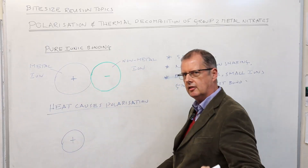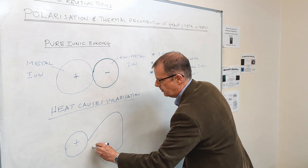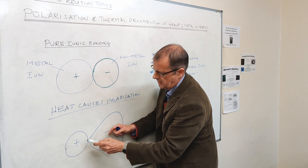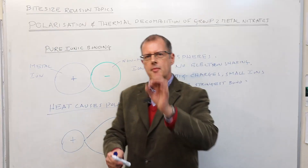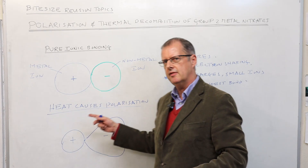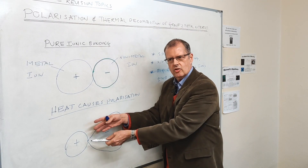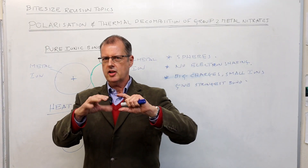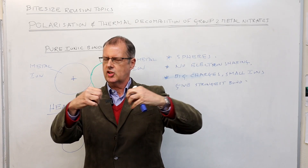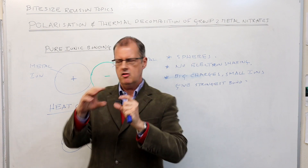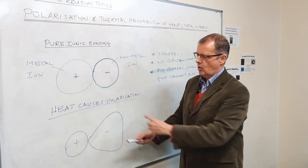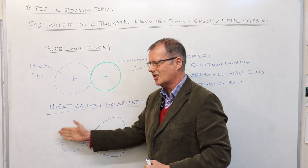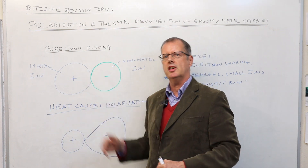So if I've got a positive metal ion, it can start to distort the shape of the non-metal ion. It's the positive ion that starts to pull electrons towards itself — electrons in the non-metal ion are pulled across. The positive attracts the electrons in the outer shell of the negative ion. It couldn't be the other way around — you can't have a negative ion attracting electrons from a positive ion. This distortion — I sometimes say to students it's a bit like one of those lava lamps, where you get blobs of oil that start to distort. In extreme cases, that distortion could actually cause the non-metal ion to break up and we end up with new materials. So polarisation is this distortion — this breakdown of the nice clean spherical shape.